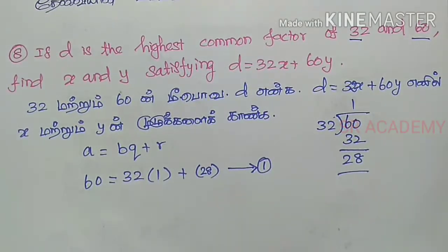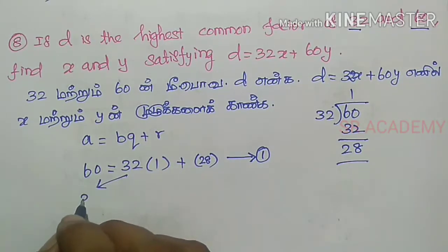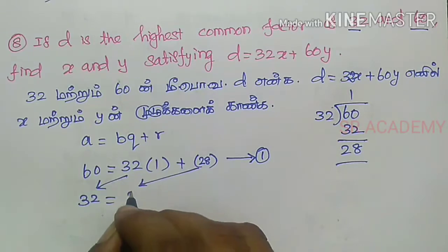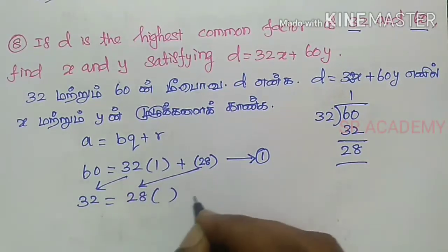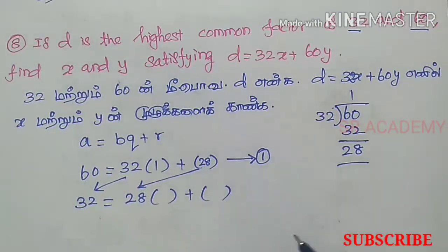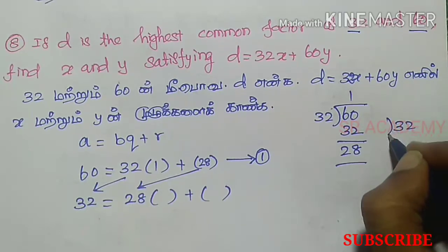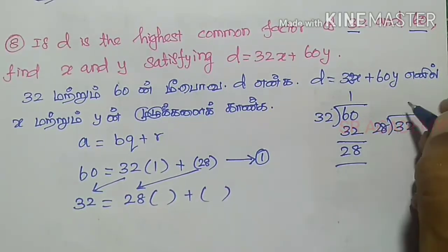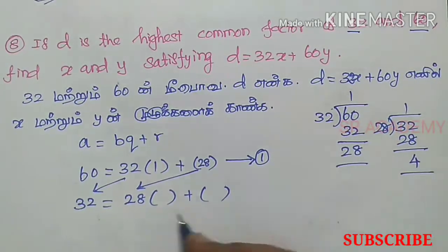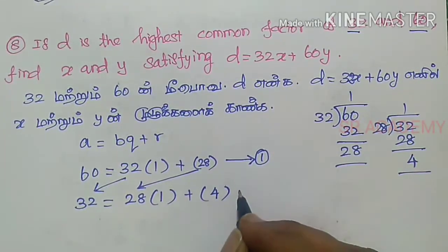Now, 32 equals 28 times quotient plus remainder. 32 divided by 28: 1 times 28, the remainder is 4. So quotient is 1 and remainder is 4.